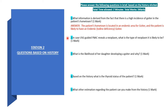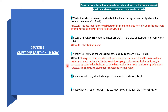Question 2: In case an ultrasound-guided FNAC reveals a neoplasm in this patient, what type of neoplasm is it likely to be? The answer is follicular carcinoma. Question 3: What is the likelihood of a daughter developing a goiter and why? The answer is that though the daughter does not share her genes, she is from the same endemic region and hence carries more than 10% chance of developing a goiter unless the iodine deficiency is corrected.